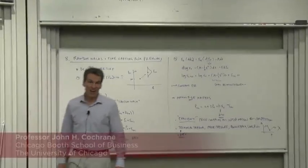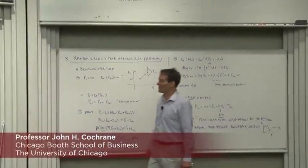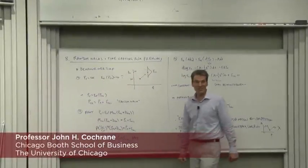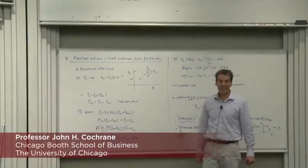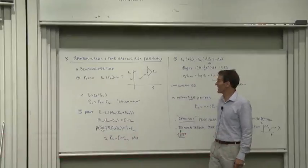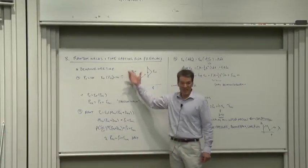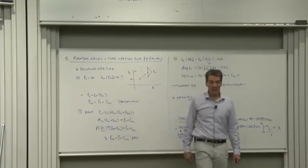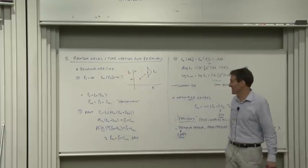So last stop in our tour of all the grand propositions of finance related to price equals expected discounted payoff: random walks, time-varying risk premiums, market efficiency.